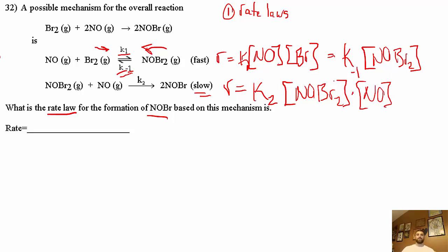There's an issue here. If we take a look, NOBr2 is an intermediate, so we can't leave it in our rate law because it's not something we can measure. If you take a look at the equation we have Br2 and NO, so our rate law has to be in terms of Br2 and/or NO, not NOBr2.